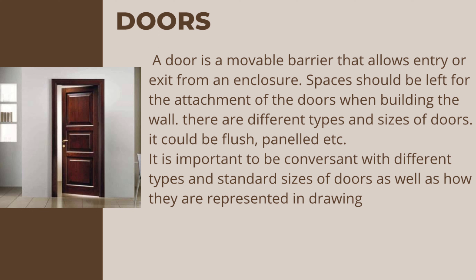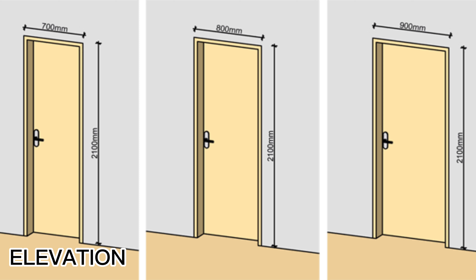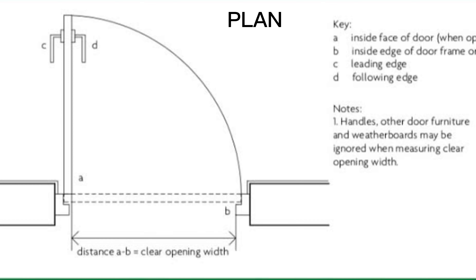The door is a movable barrier that allows entry or exit from an enclosure. Spaces should be left for the attachment of doors when building the wall. There are different types and sizes of doors — they could be flush, panelled, glazed, etc. It is important to be conversant with different types and standard sizes of doors, as well as how they are represented in drawings.